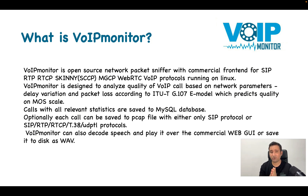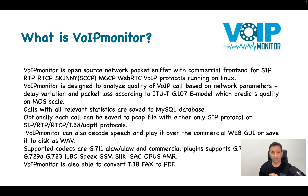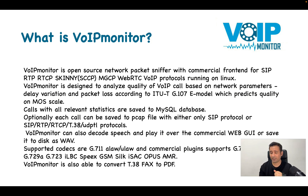VoIP Monitor can also decode speech and play it through the commercial web UI, and we will see an example in the next slides. The supported codecs are G.729, G.723, iLBC, Speex, Opus, AMR, and more. VoIP Monitor is also able to convert T.38 fax to PDF, so if you have fax over IP in your network — for example running a fax system using FreeSWITCH or Asterisk — it can capture those packets and convert them to PDF.